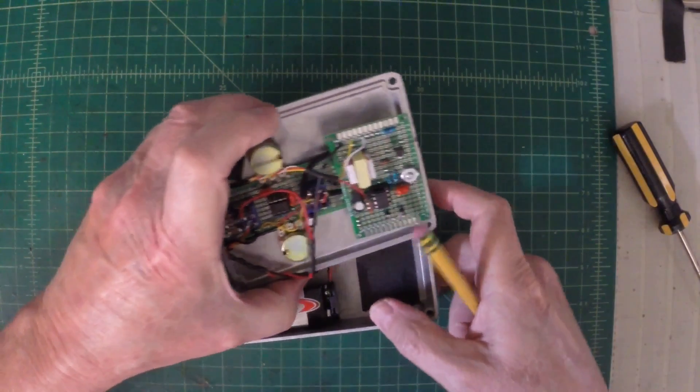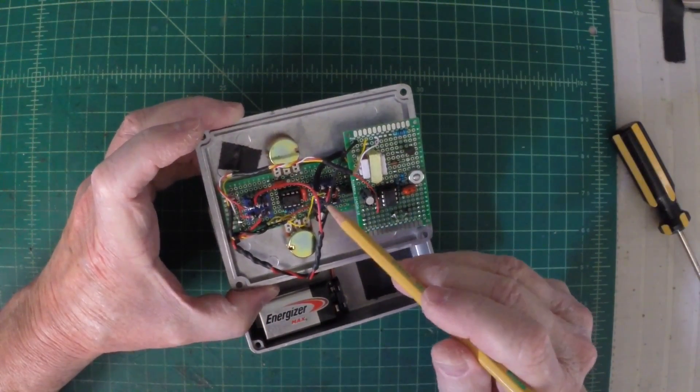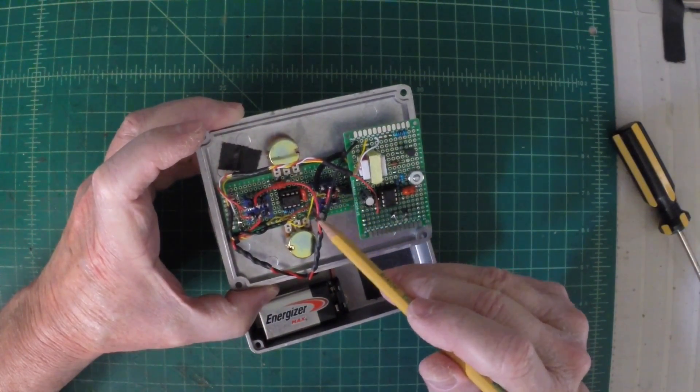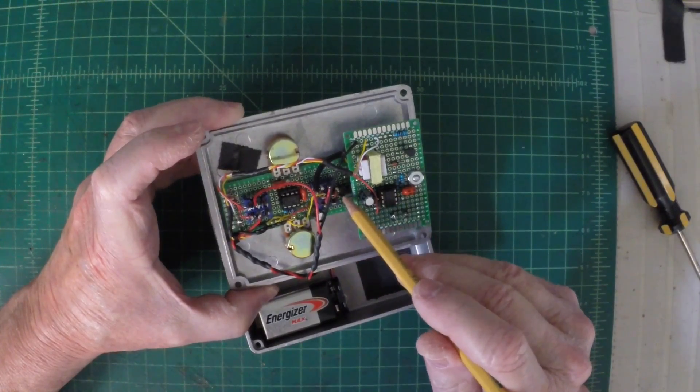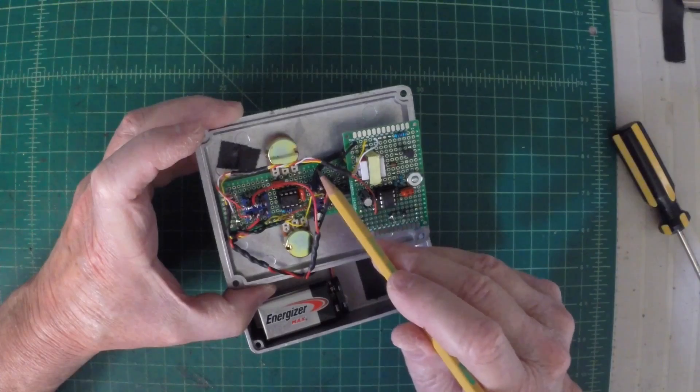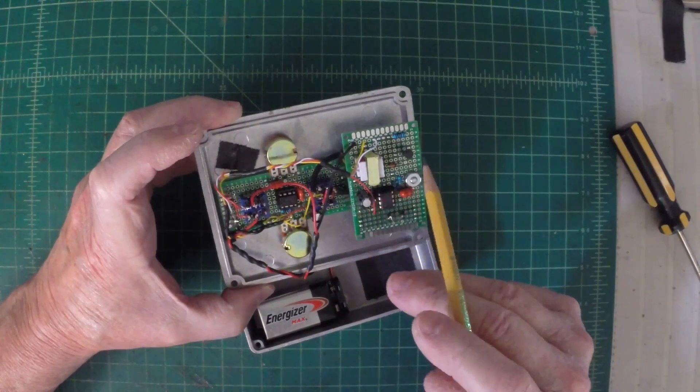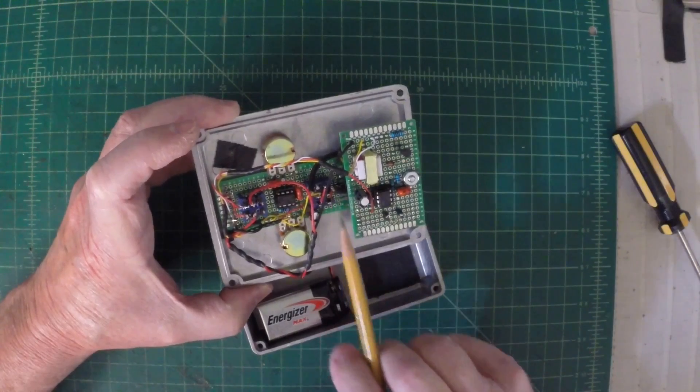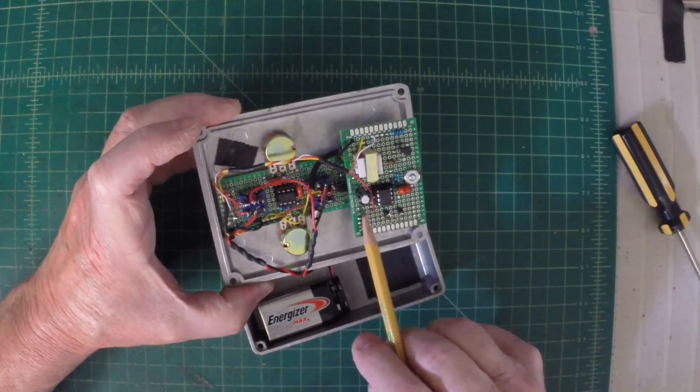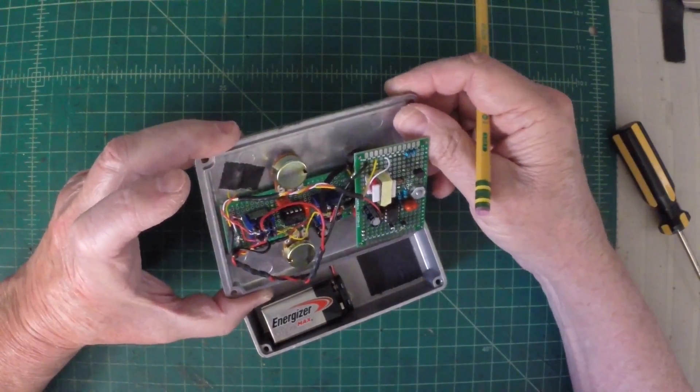And again, that's just a screw in place there. I did not use coax. I'm just using shielded audio cable here. I think there's still some opportunities to improve the design there by doing a better job of shielding the oscillator itself from the receiver section. But it seems to work pretty well.